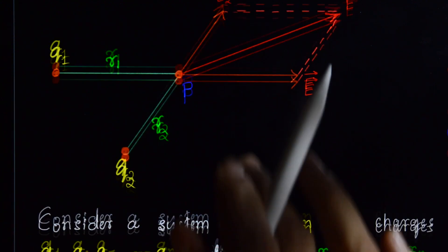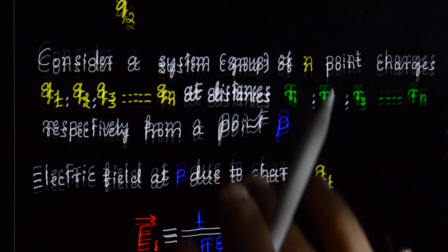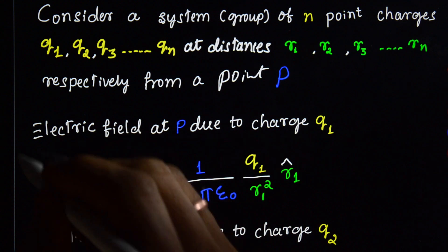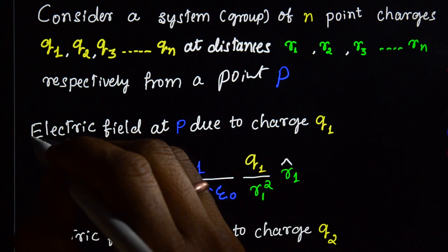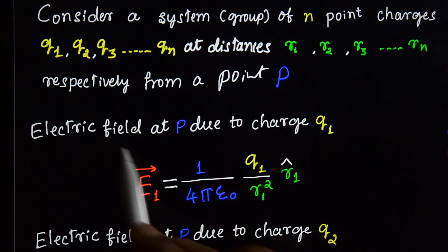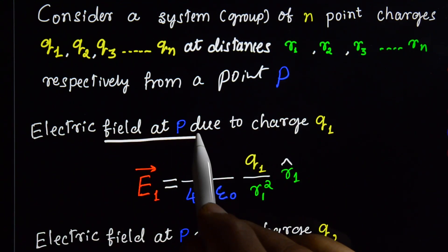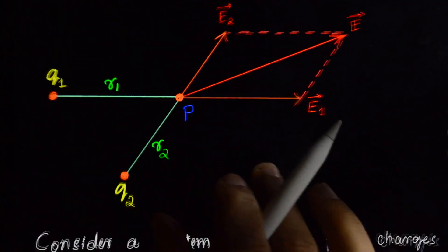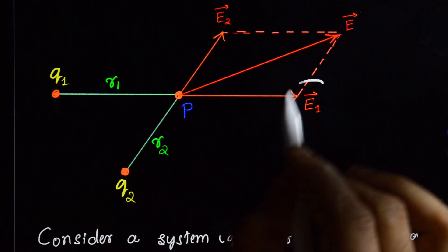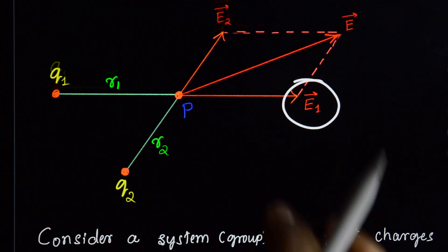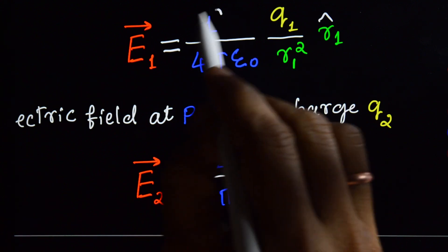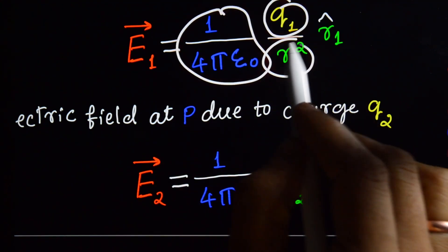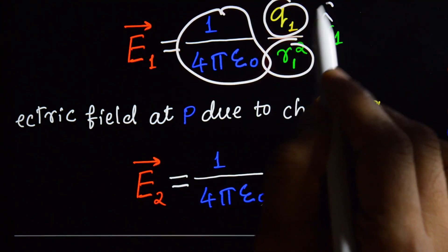Next, write the electric field at each point. The electric field at P due to charge q1 is: E1 = (1/4πε₀) · (q1/r1²) · r̂1.